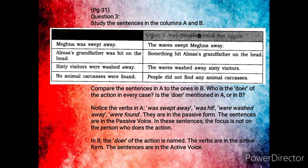In column B you can see: swept, hit, washed, find — they are all in active form. So the sentences in column B are in active voice, whereas the sentences in column A are in passive voice.